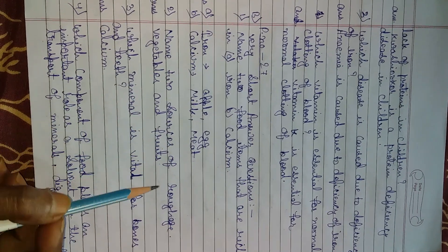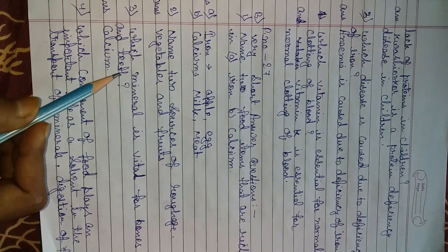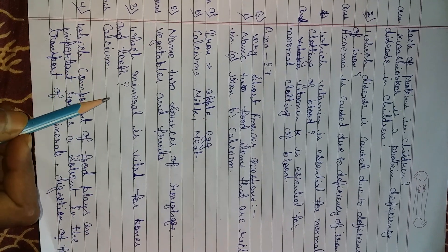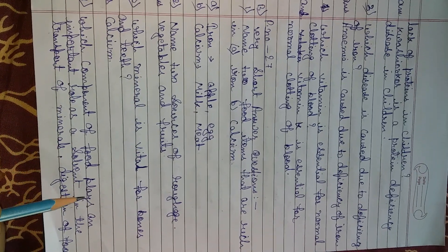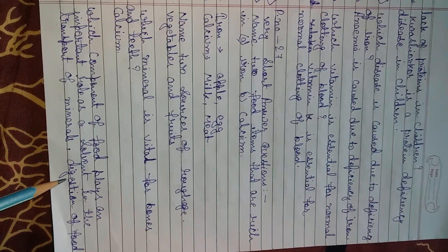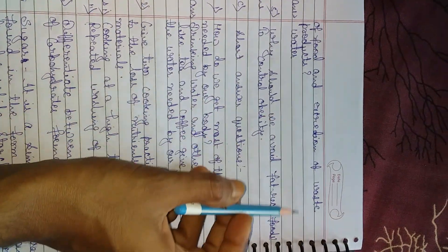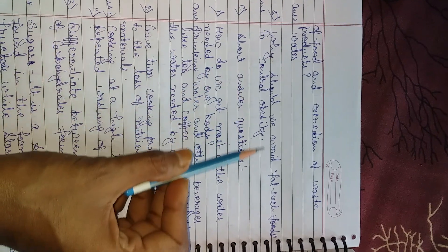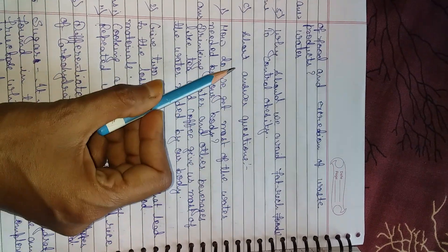Name two sources of roughage — vegetables and fruits. Which mineral is vital for bones and teeth? Calcium. Which component of food plays an important role as a solvent in the transport of minerals, digestion of food, and excretion of waste products? Answer: Water.